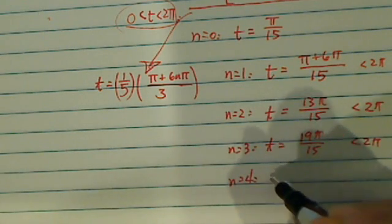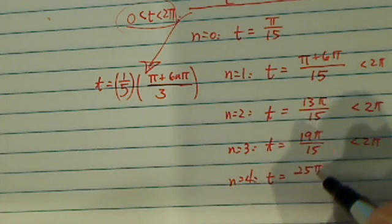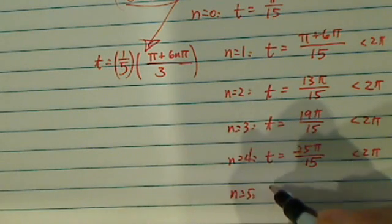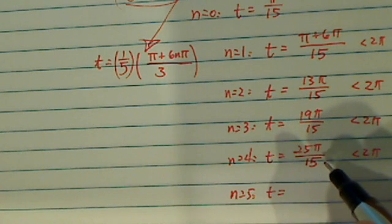Let's try one more. n equal to 4, and t is equal to 25 pi over 15. Okay, this is going to be enough, because when n equal to 5, t is going to be equal to, let's say, 530.